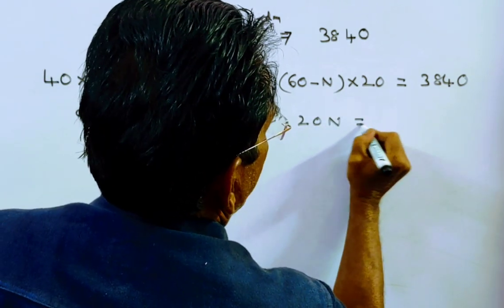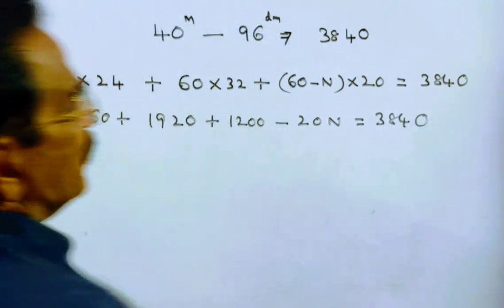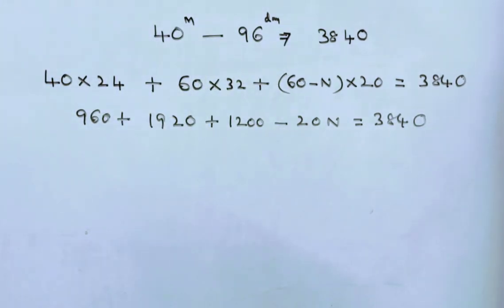Minus 20n is equal to 3840 friends. From this you have to find n.